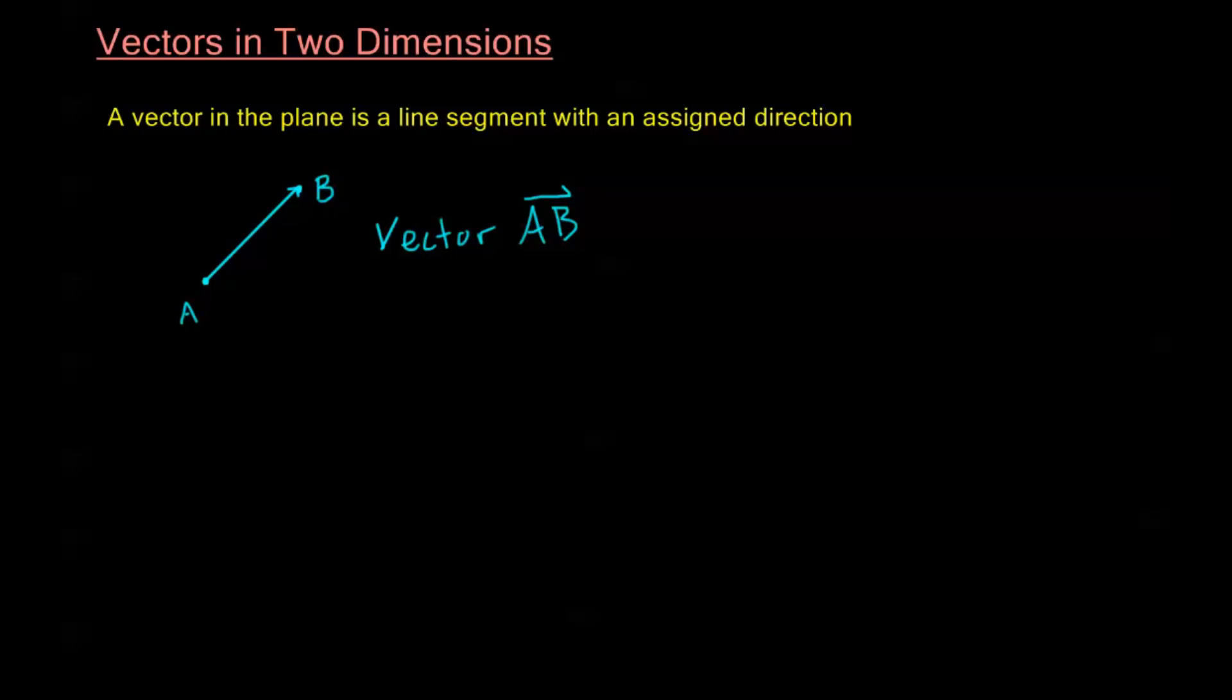Now, I do this little kind of half arrow and that's fine. A lot of times you'll also see a full arrow and that means the same thing. It means this is a vector AB.